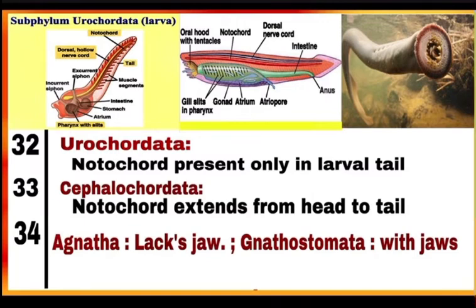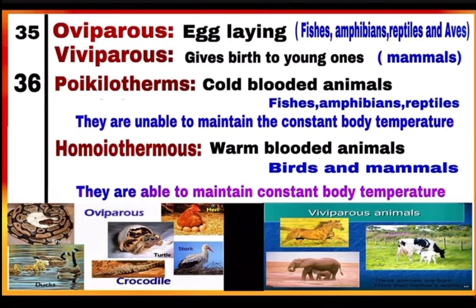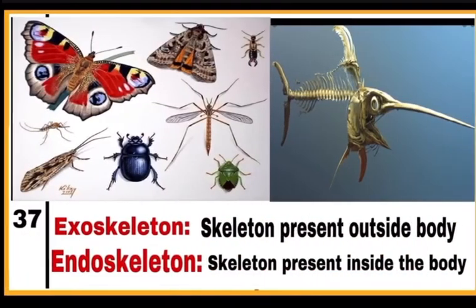Oviparous: egg-laying animals like fishes, amphibians, reptiles and birds. Viviparous: animals which give birth to young ones, as in mammals — but platypus is a mammal and is oviparous. Poikilotherms: cold-blooded animals like fishes, amphibians and reptiles, which are unable to maintain a constant body temperature. Homeotherms: animals which are able to maintain constant body temperature, called warm-blooded animals, like birds and mammals.